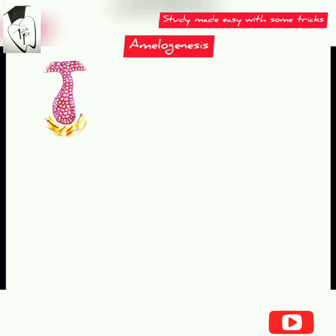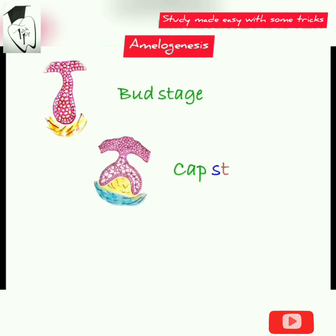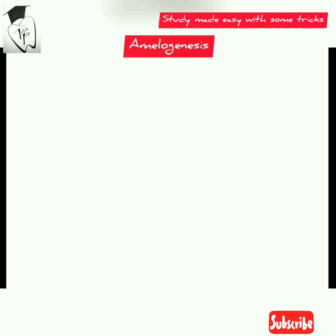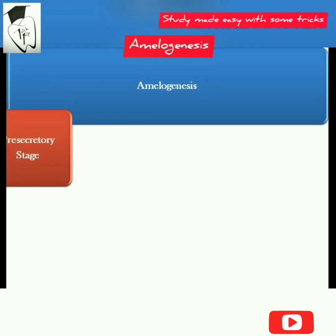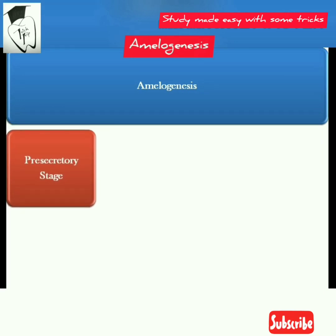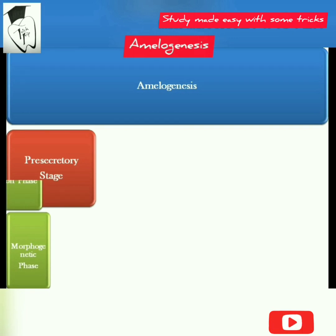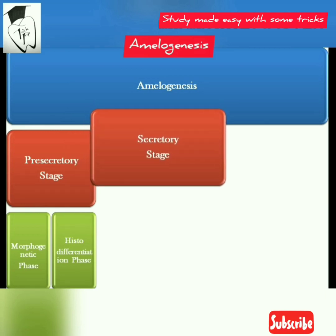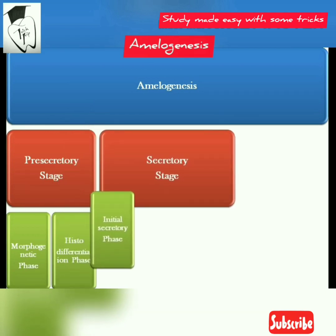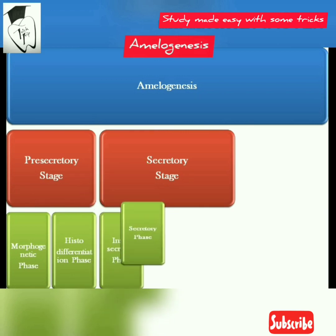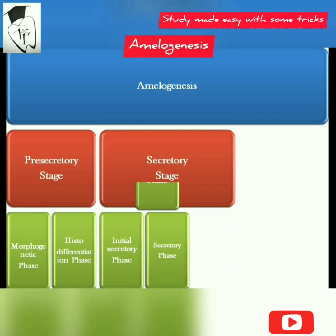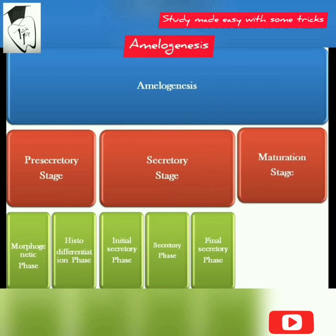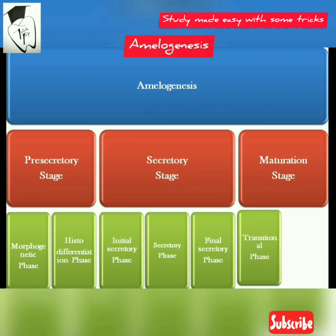The formation of ameloblasts starts from the bud stage through the cap stage up to the bell stage. Amelogenesis is divided into three stages: the first is the pre-secretory stage, further divided into the morphogenetic phase and histo-differentiation phase. The second is the secretory stage, divided into initial secretory phase, secretory phase, and final secretory phase. The third is the maturation stage, divided into the transitional phase and maturation proper.